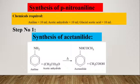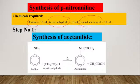What are the chemicals required for the synthesis of para-nitroaniline? First, we require aniline, then acetic anhydride, and glacial acetic acid.